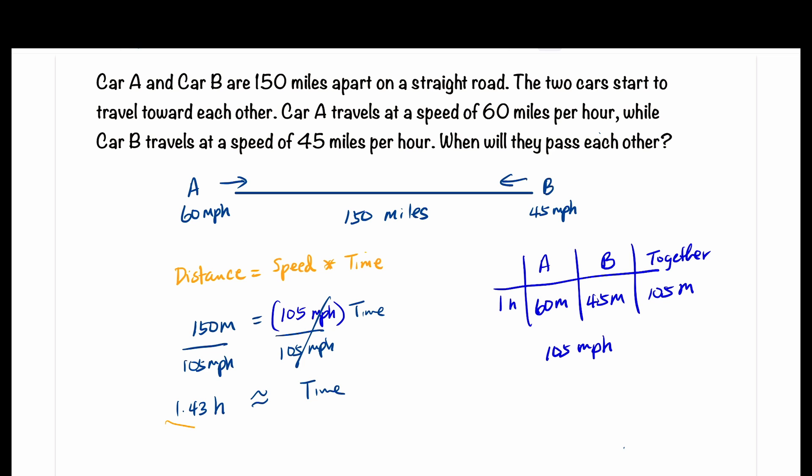And this is our answer. The key point to take away from this problem is that in the context of two cars moving toward each other, the relative speed is the sum of their individual speeds. And that's it for this problem.